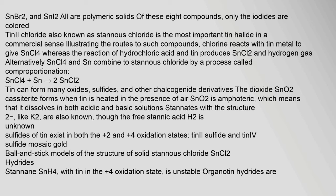Stannous chloride, also known as tin(2) chloride, is the most important tin halide in a commercial sense. Chlorine reacts with tin metal to give tin(4) chloride, whereas the reaction of hydrochloric acid and tin produces tin(2) chloride and hydrogen gas. Alternatively, tin(4) chloride and Sn combine to give stannous chloride by a process called comproportionation. Tin can also form many oxides, sulfides, and other chalcogenide derivatives. The dioxide, tin(4) oxide (cassiterite), forms when tin is heated in the presence of air and is amphoteric.